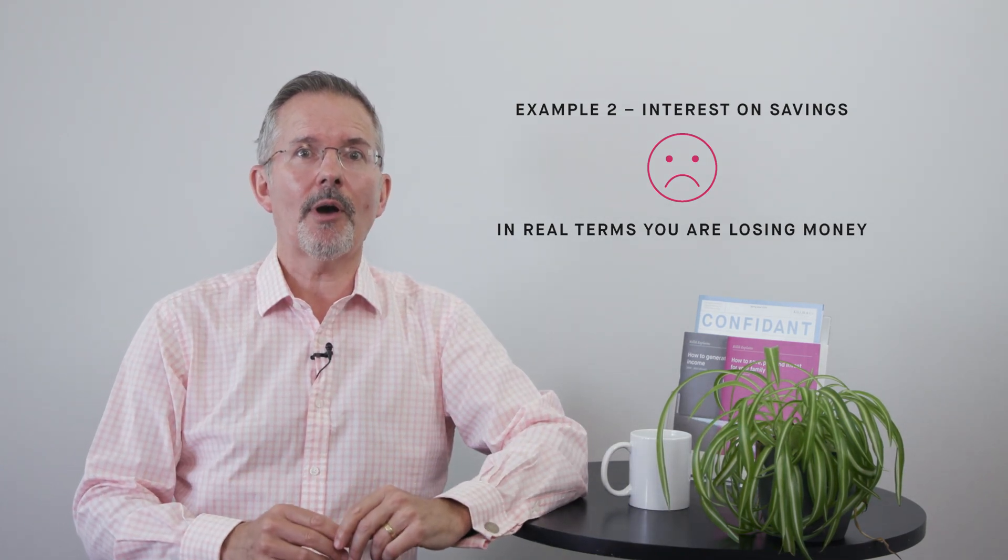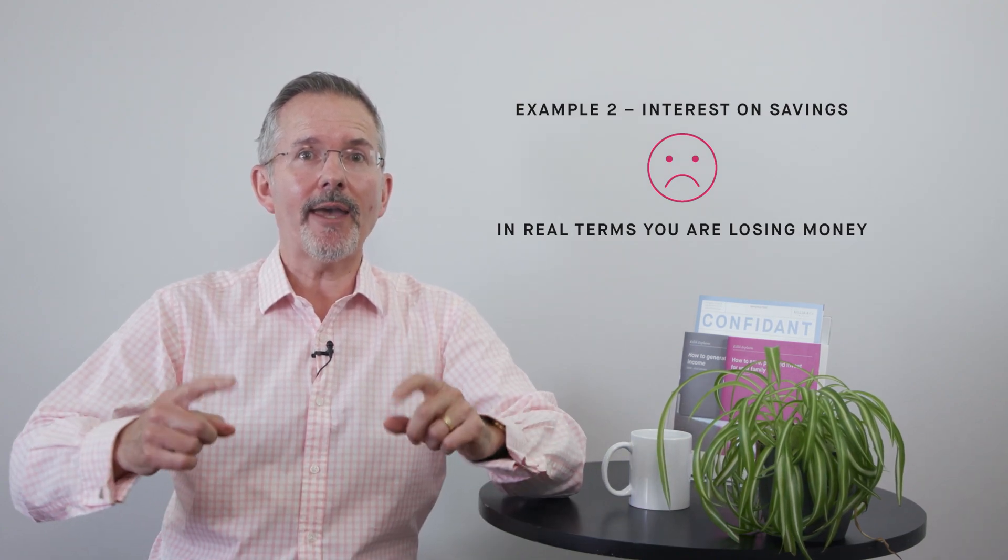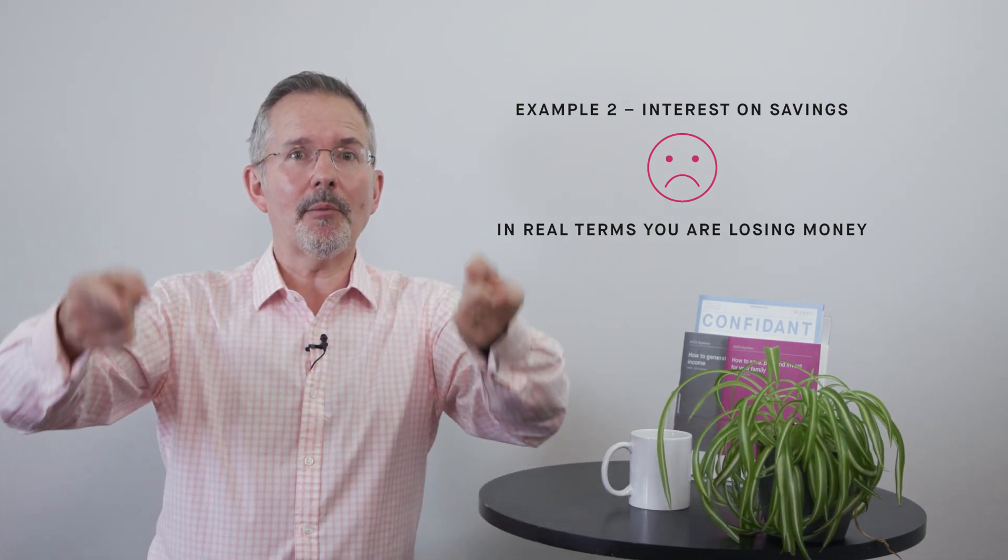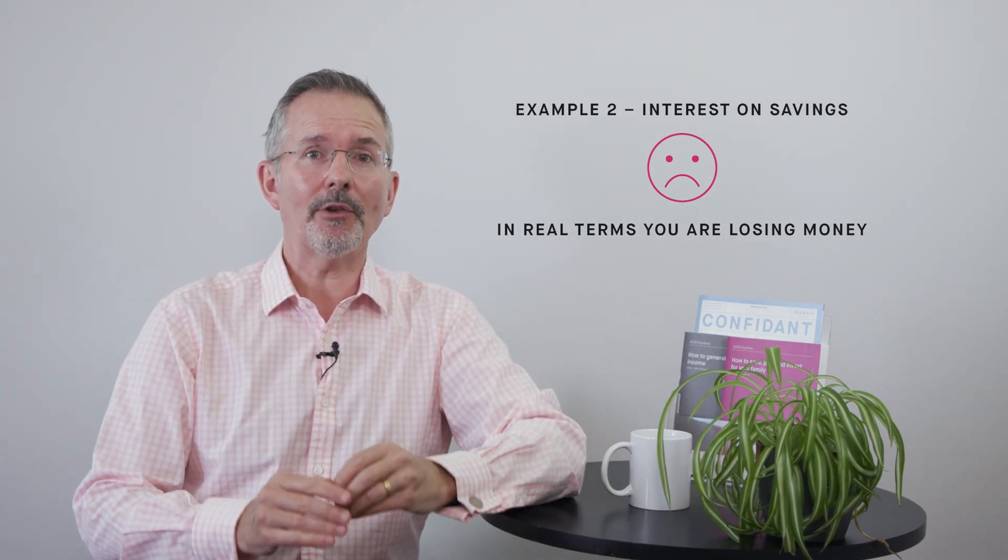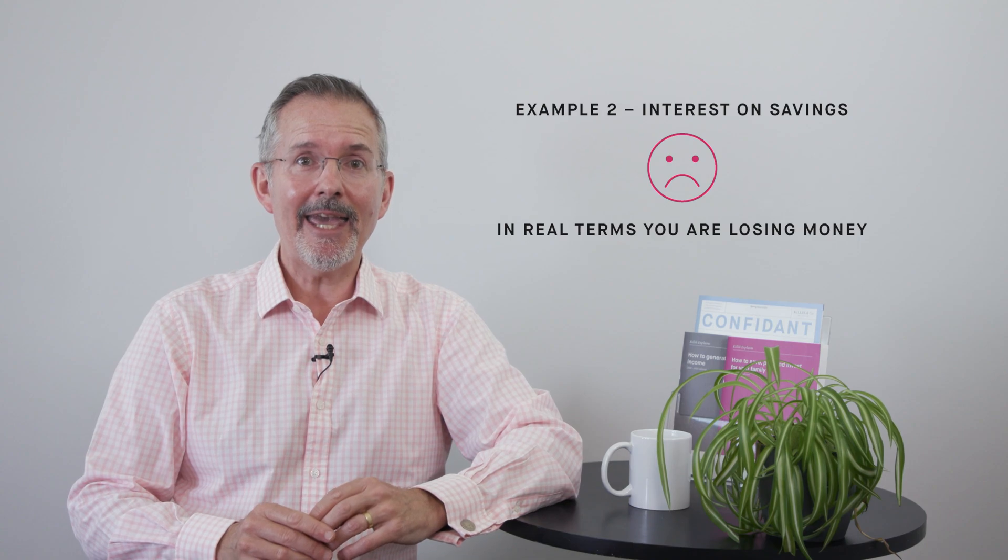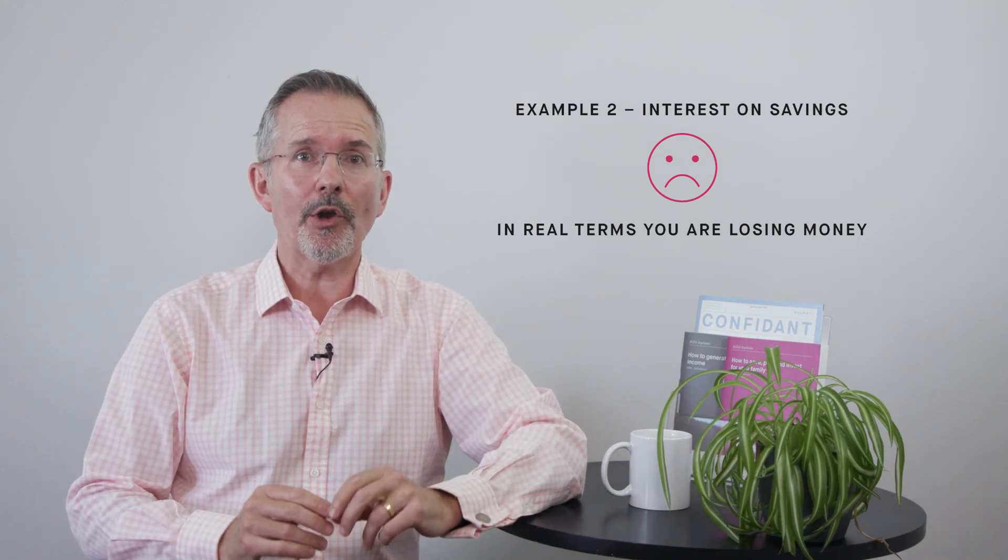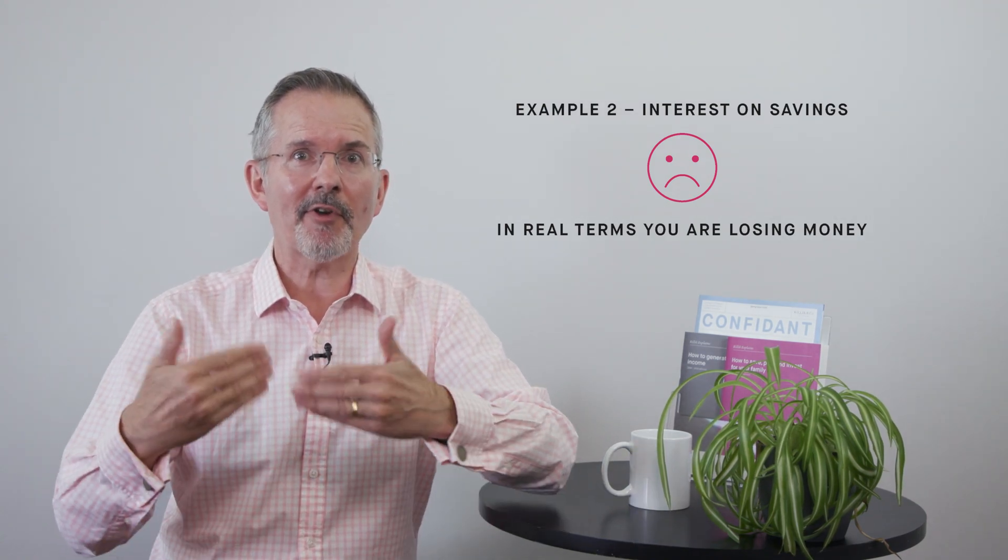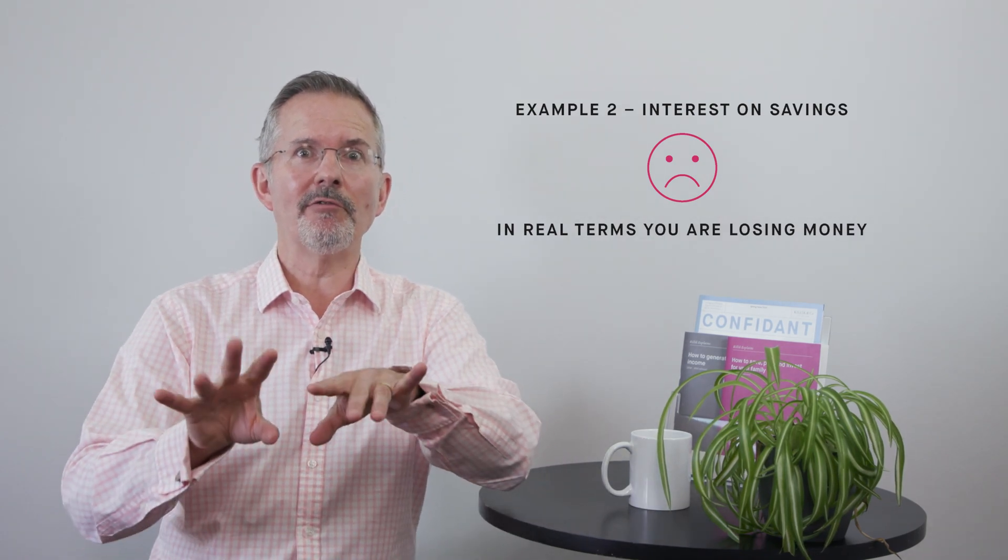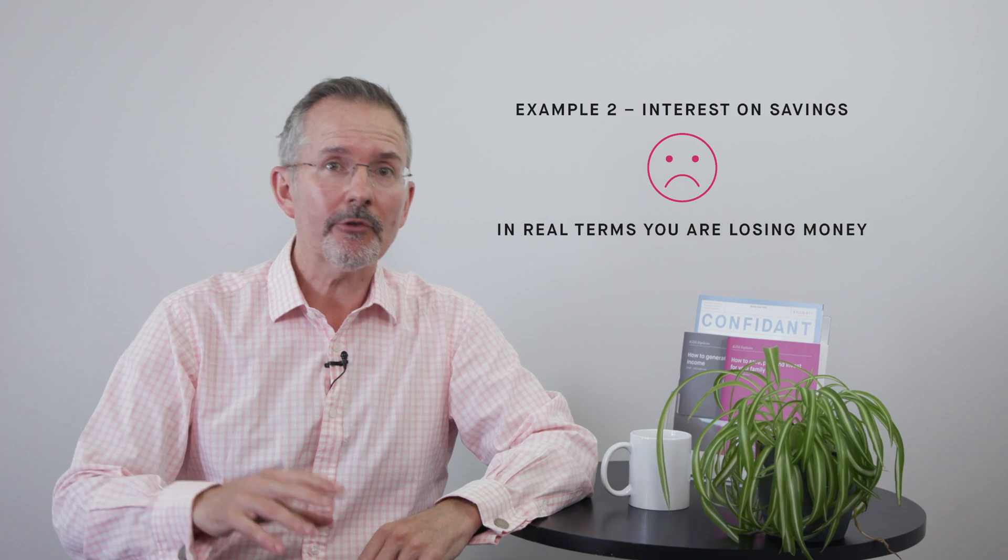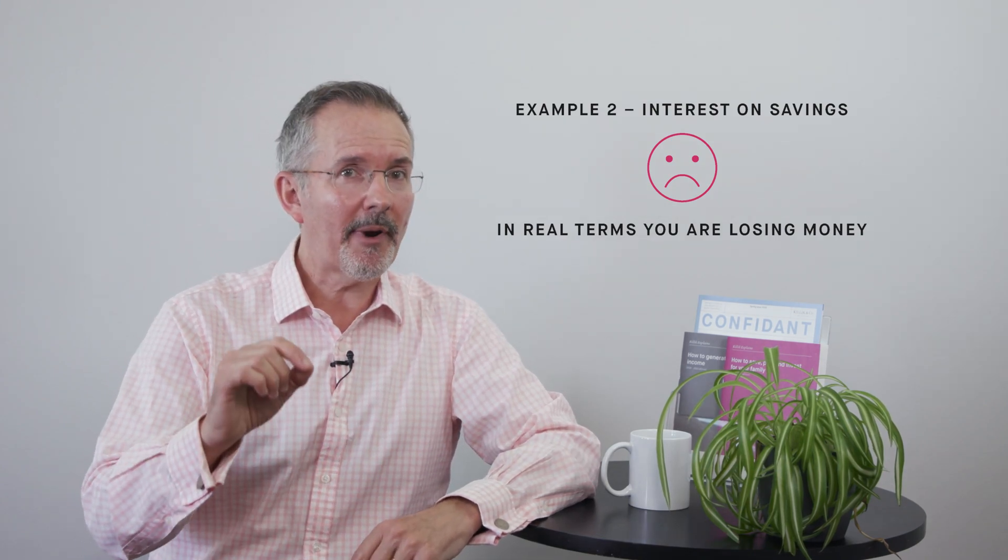The rule of 72, which I mention a lot, says if you take the number 72 and divide it by an inflation rate of 10%, you get 7.2—that's how many years it would take to halve what your money will buy if inflation keeps up at 10% and you're earning very little on your capital. Quite scary stuff.